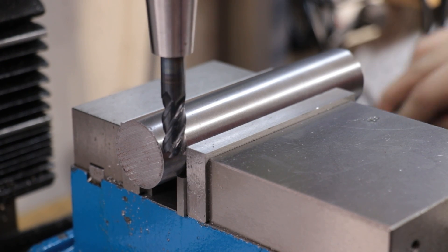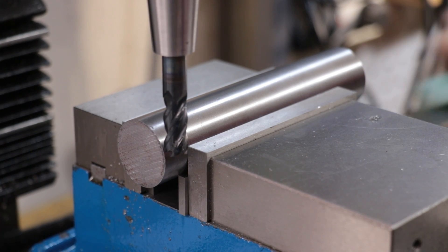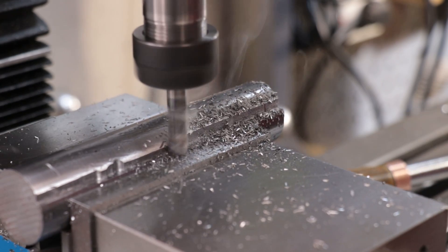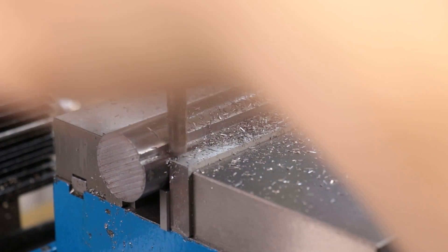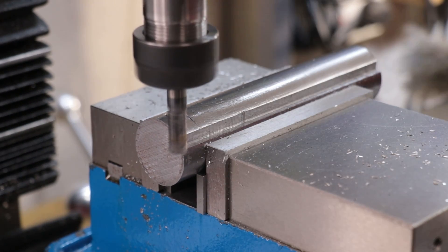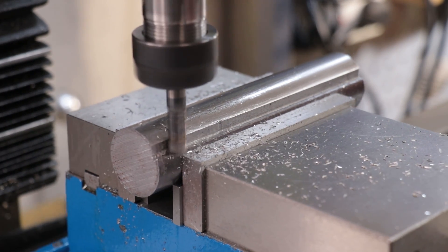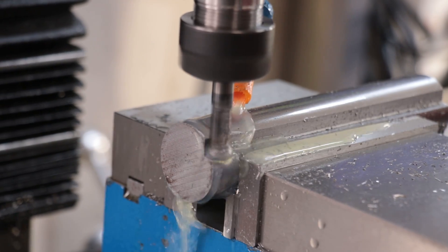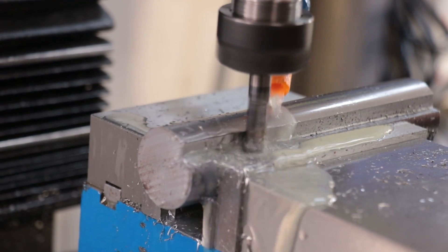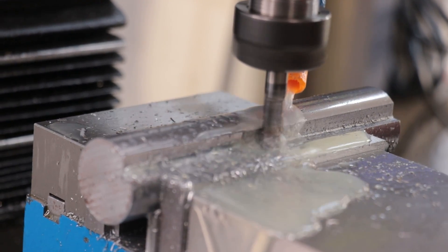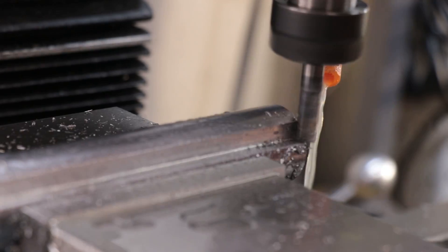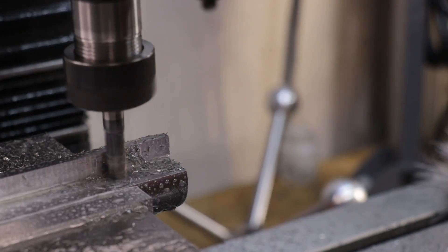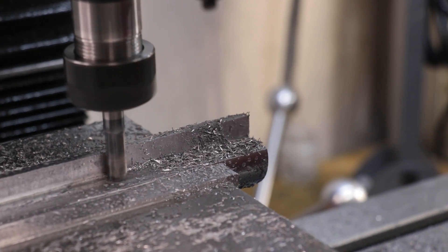The next thing I need to do is mill a big L-shaped step into the side of the steel, and I'll keep going until I'm about halfway through into the steel.